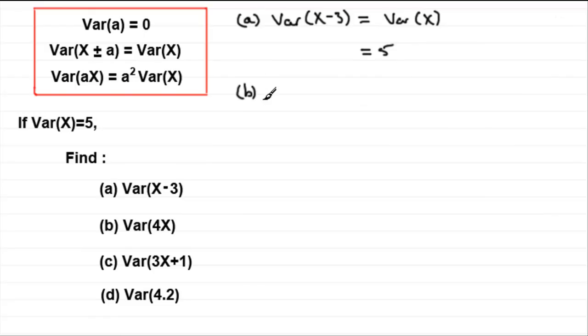Part B now, variance of 4X. We're multiplying our random variable X by 4. So, what does this equal? Well, it's this one here, this formula here, where whatever our constant is, which in this case was 4, we square it and multiply it by the variance of X.